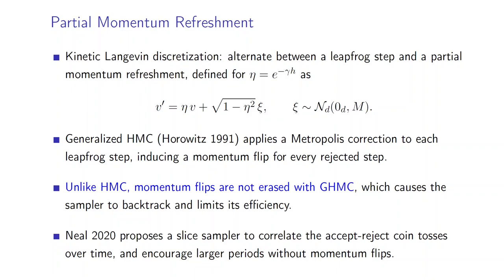We emphasize that there have been many works to try and mitigate these flips. We highlight in particular one algorithm proposed by Radford Neal, which proposes a slight sampler to correlate the accept-reject coin tosses over time in order to encourage larger periods without momentum flips.